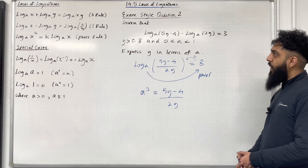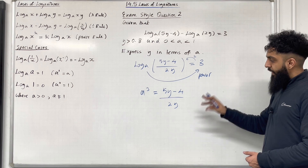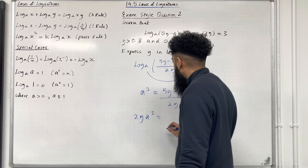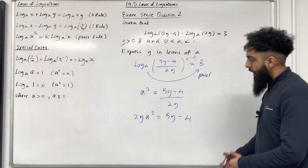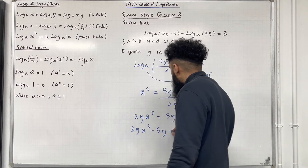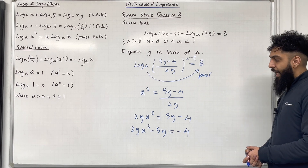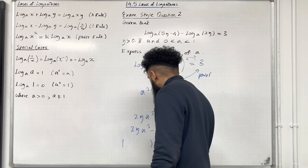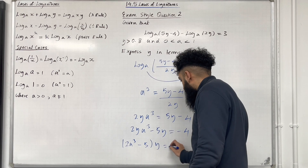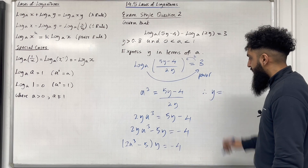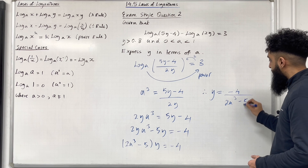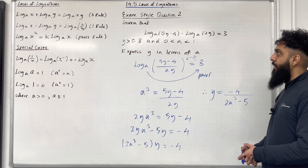Now we need to make y the subject — we want to express y in terms of A. Firstly, I can multiply both sides by 2y, giving me 2y A to the power 3 equal 5y minus 4. Now I can take the 5y to the left-hand side: 2y A cubed minus 5y equal minus 4. I can take out a common factor of y, so inside the bracket I'll have 2A cubed minus 5, and this must equal minus 4. Therefore, y is equal to minus 4 divided by (2A cubed minus 5). This completes exam style question 2.